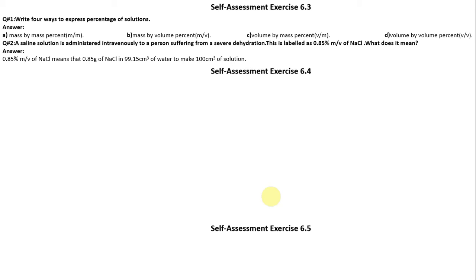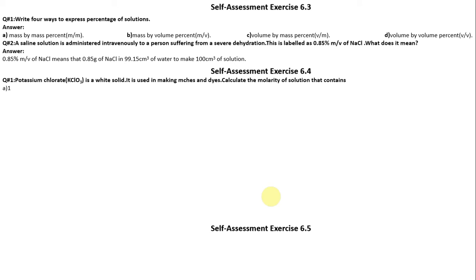The resulting solution is 100 cm³ of saline solution. Now Self-Assessment Exercise 6.4, Question Number 1: Potassium chlorate (KClO3) is a white solid used in making matches and dyes. Calculate the molarity of solution that contains part (a): 1.5 moles of this compound dissolved into 250 cm³ of solution.